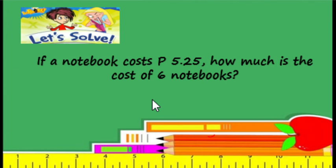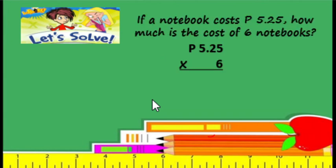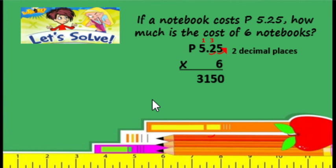Let's solve this. If a notebook costs 5 pesos and 25 centavos, how much is the cost of 6 notebooks? So we are going to multiply 5.25 by 6. Write the numbers in column form and then multiply as if we are multiplying whole numbers. So 6 times 5 is equals to 30, carry 3. 6 times 2 is equals to 12, plus 3 is equals to 15, carry 1. Then 6 times 5 is equals to 30, plus 1 is equals to 31. Then count the number of decimal places in the factors: 1, 2 — two decimal places. So in the product, we place 2 decimal places going to the left: 1, 2. So the answer is 31 pesos and 50 centavos.